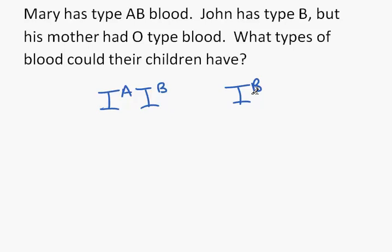It could be another B or a recessive O. When we look at John's mother, being O type, she could only have two small i's as alleles. She had to give John a small i.